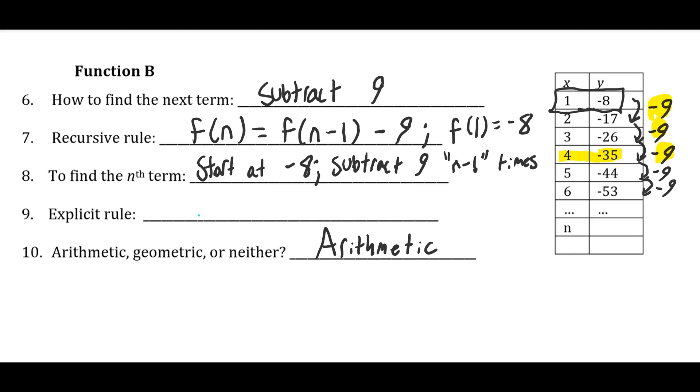So then we can use that to write an explicit rule, f of n equals negative 8 minus 9 times n minus 1. And that takes care of that example.